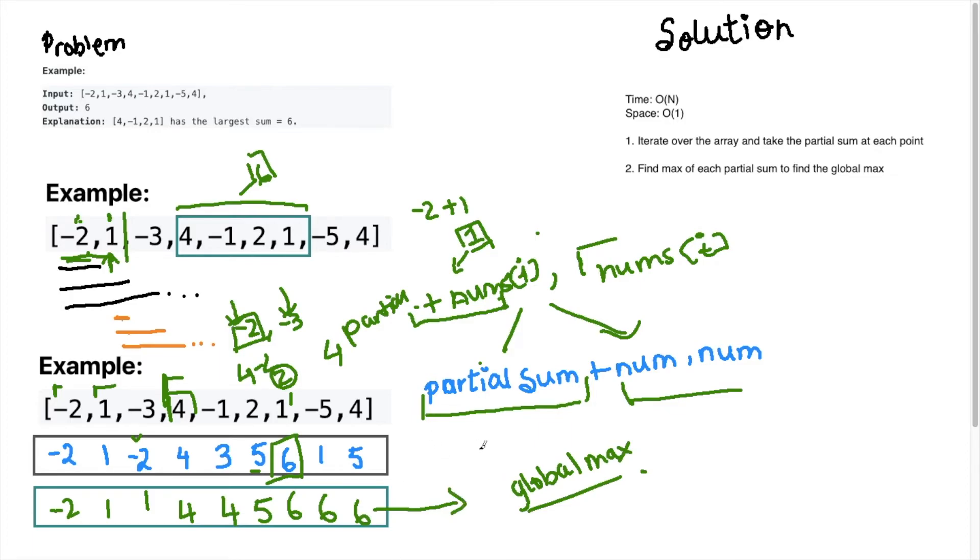Okay, I hope this solution makes sense to you. And this is a very useful way to solve these types of dynamic programming questions. So the time for this solution would be O(n) because we will only iterate over the array once and calculate the partial sum and also the global max on the go.